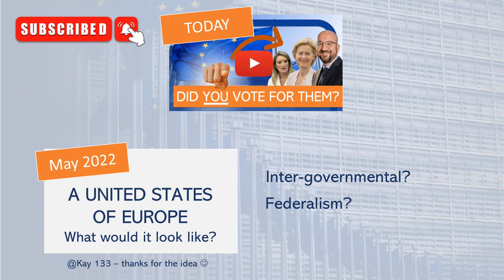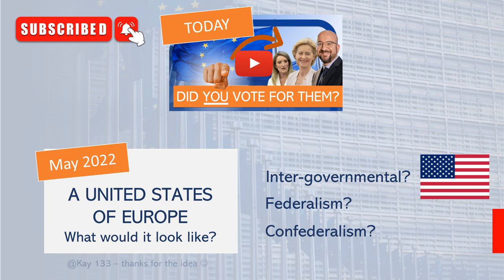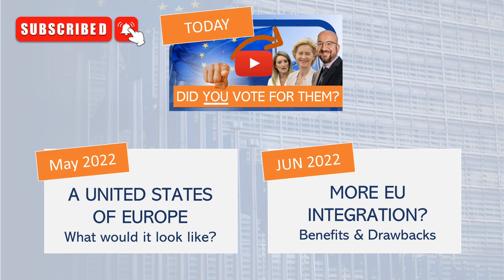For instance, the US model with one elected president, or rather a Swiss model where there are seven heads of state. The final video of this series will evaluate the benefits and drawbacks of a more federal Europe, and whether this is likely to happen. If you're interested in these topics, please subscribe and hit the bell icon to be notified. And please write in the comments what you think — is the EU democratic, and what changes would you like to see?